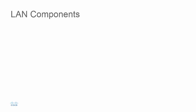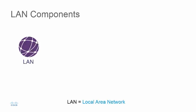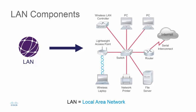A local area network, or a LAN, is a computer network that connects different devices so they can exchange information. Regardless of its size, a LAN needs certain devices and other components so it can operate.